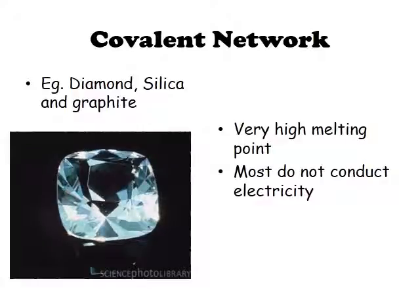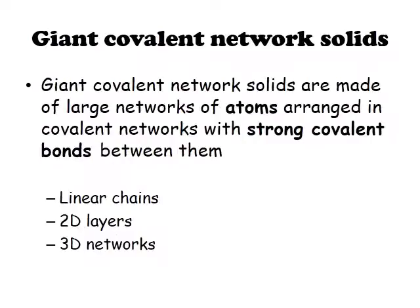The next type of covalent bonding is covalent network bonding, with examples including diamond, silica, and graphite. Here's a picture of a diamond, which has covalent network bonding. Diamond has very high melting points — around 1000 to 2000 degrees Celsius — and most do not conduct electricity, but there are provisos to watch out for.